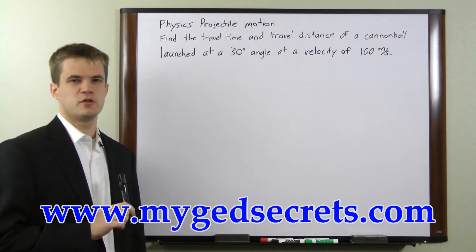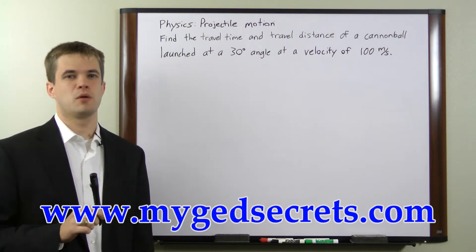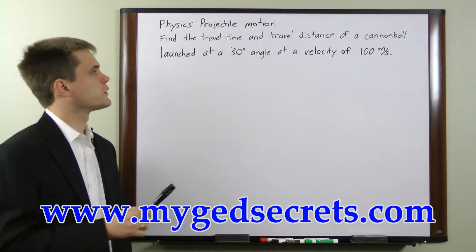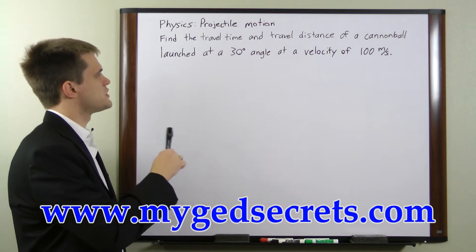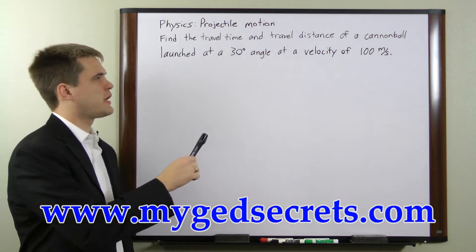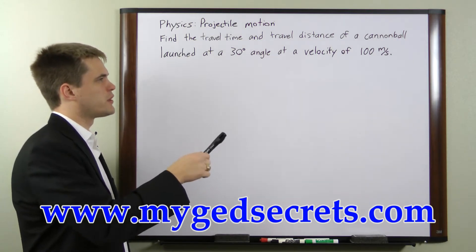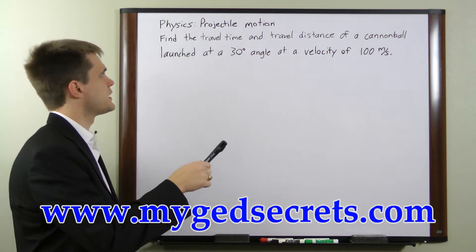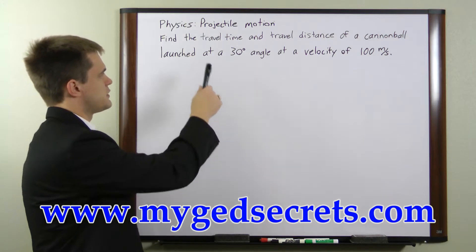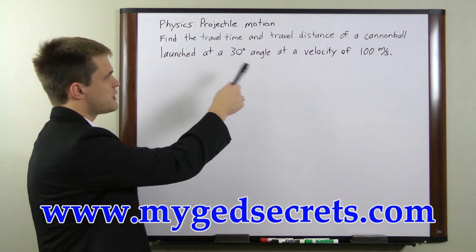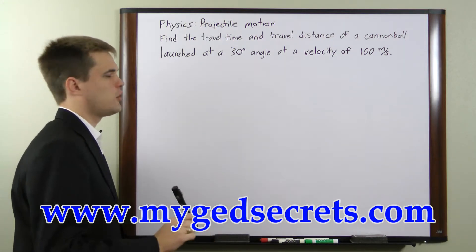What we have here is a two-dimensional projectile motion problem. We're told that a cannonball is launched at a 30-degree angle and at a velocity of 100 meters per second, and we're asked to find the travel time and travel distance of the cannonball.